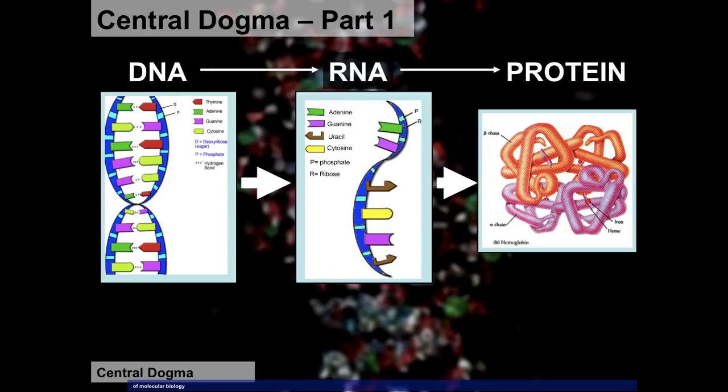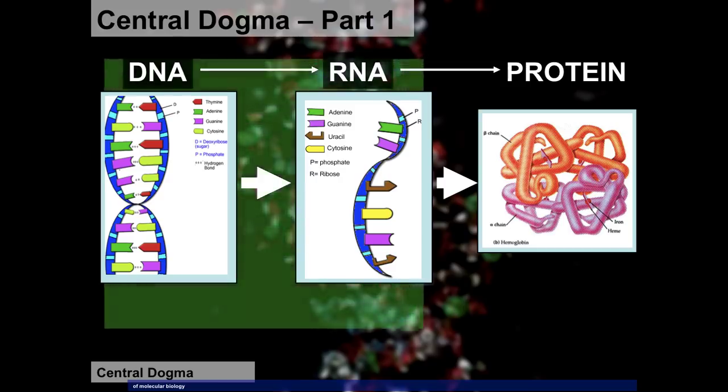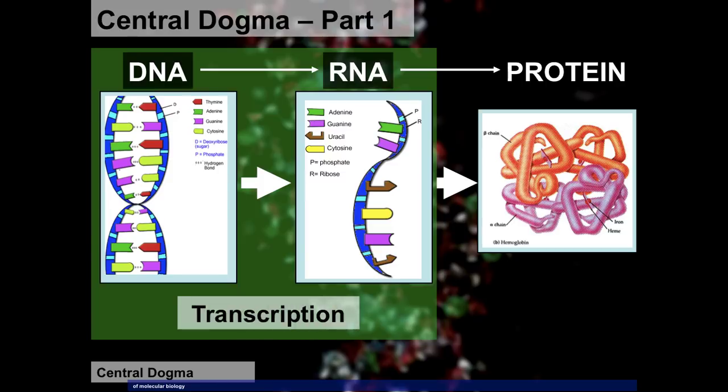The central dogma theory tells us how our DNA within our nucleus gets transcribed into RNA and then translated into actual protein. The word 'dogma' means principles or a set of instructions, so the central dogma theory is the set of instructions for how this happens.